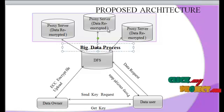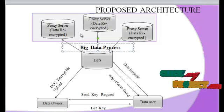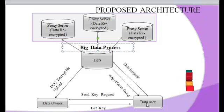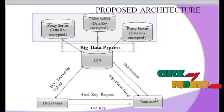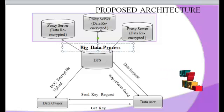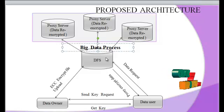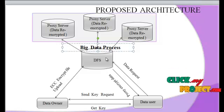At the proxy server, the ECC files are re-encrypted again for secure cloud storage. When the user provides the encryption key received from the owner, the file is downloaded from the proxy server in ciphertext file format.